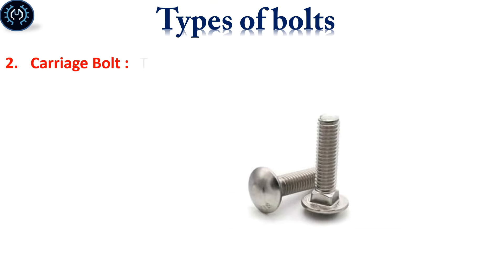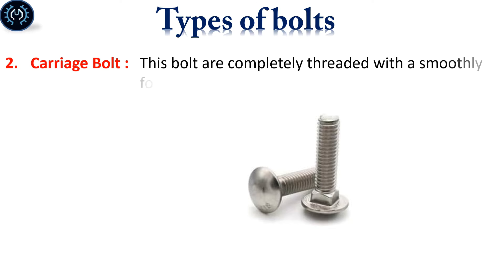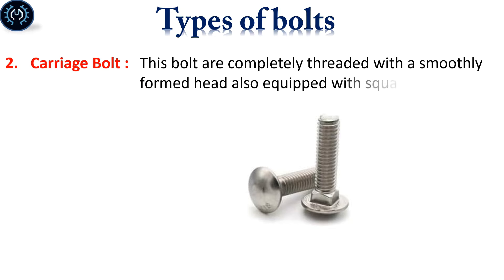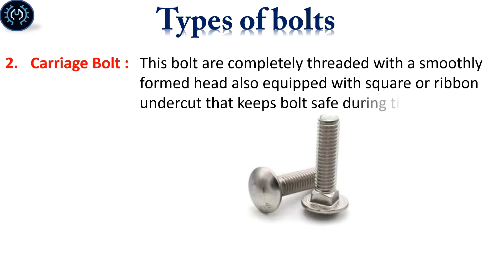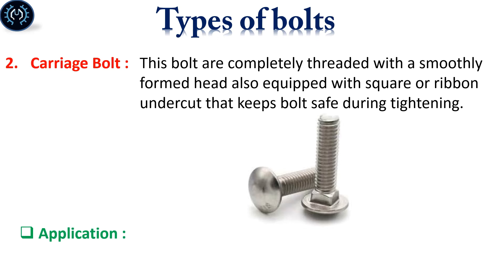Carriage bolt. These bolts are completely threaded with a smoothly formed head, also equipped with a square or ribbed undercut that keeps the bolt safe during tightening. This type of bolt is used for fastening wooden goods with metals.